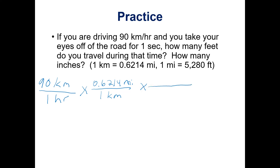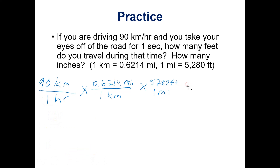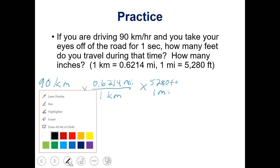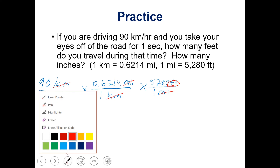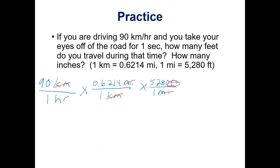Now we've gotten rid of kilometers and miles, and we have feet — one of the units we want. Then we want to convert hours to seconds. We know there are 60 minutes in one hour, and we put hours on top because we're trying to get rid of hours on the bottom. We also know there are 60 seconds in one minute.